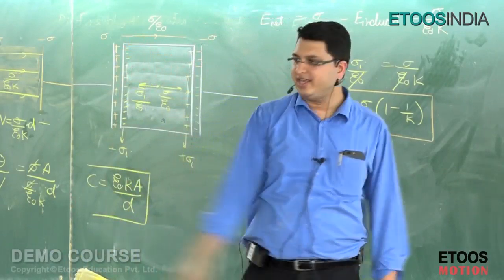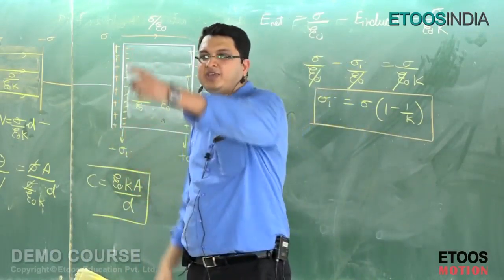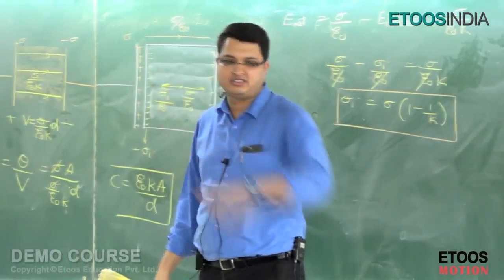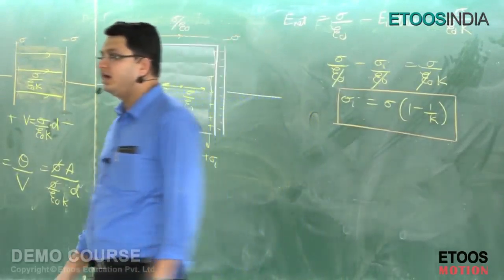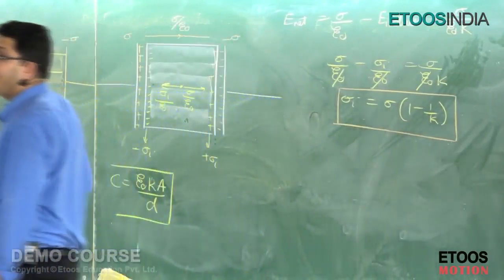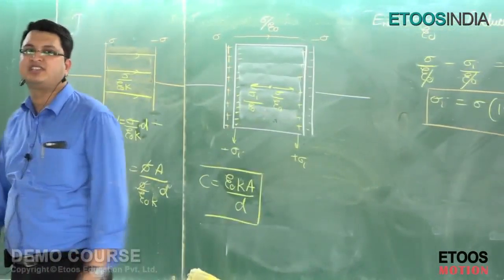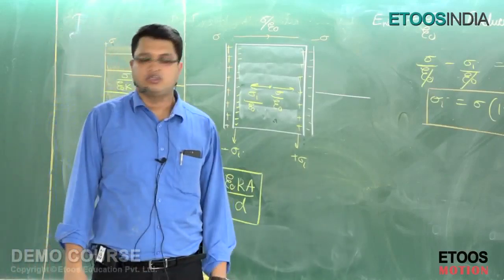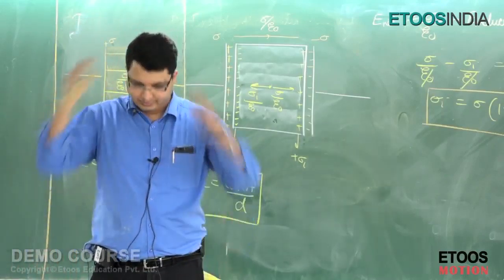So the dielectric has two uses: first, it provides support to the plates; and second, it also increases the capacitance of the system by a factor K, since C = ε₀KA/D instead of ε₀A/D.